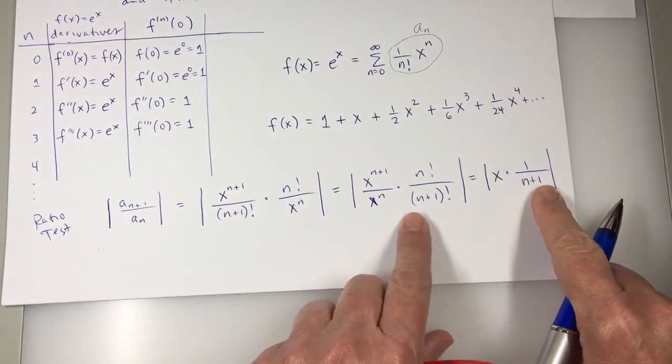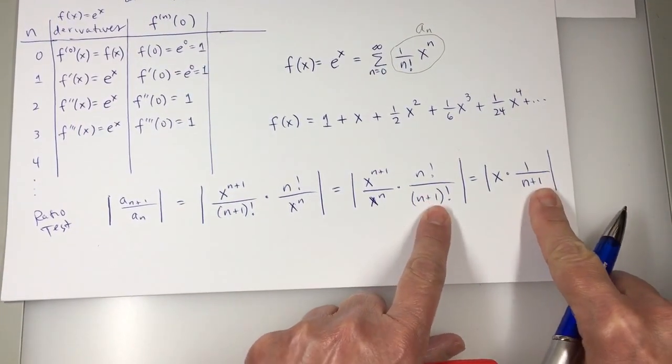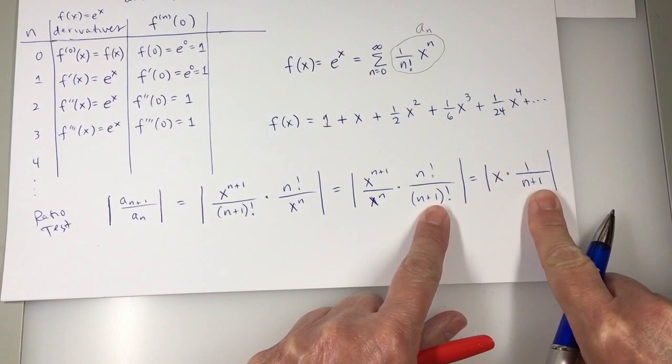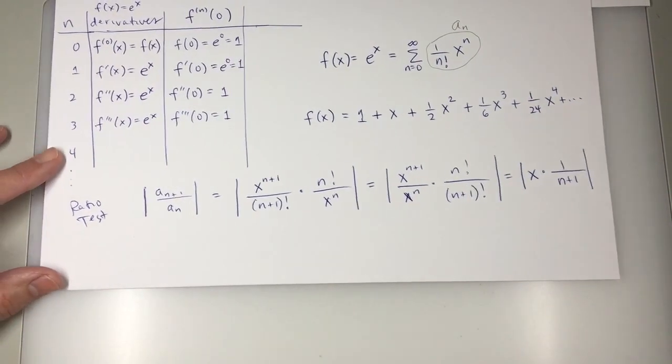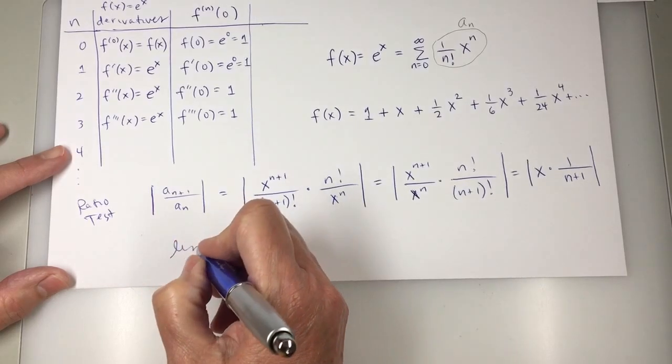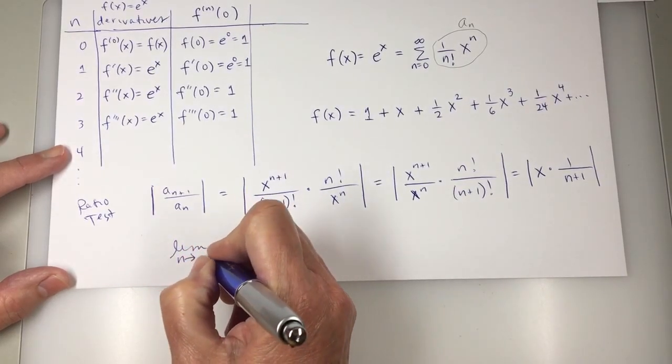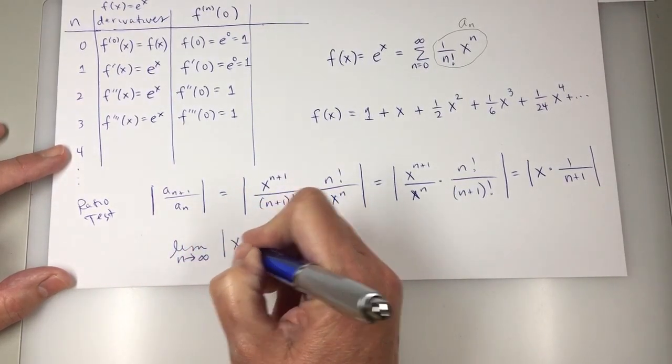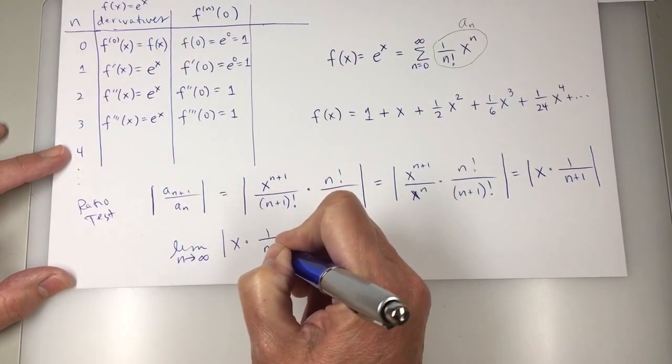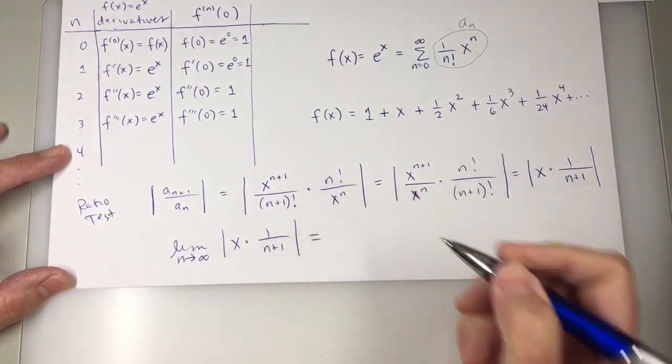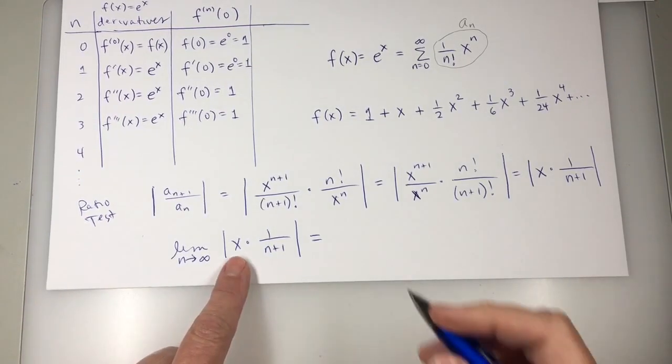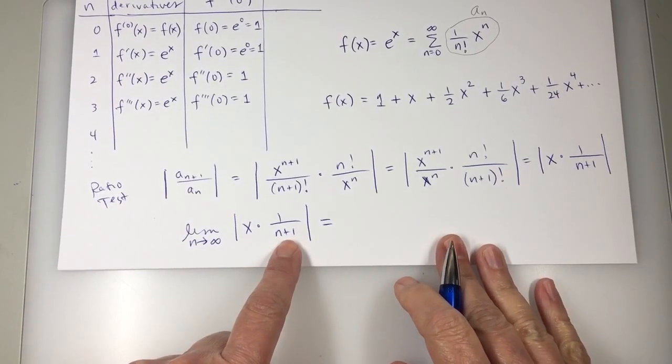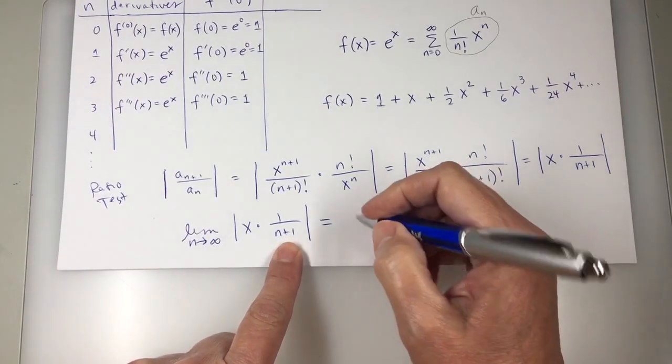If you're not sure about that, you need to see me about that for an explanation. So there's my ratio and the limit as n approaches infinity of the absolute value of x times 1 over n plus 1. That equals what? 0. This is x times 0. Because 1 over n plus 1 has gone to 0.